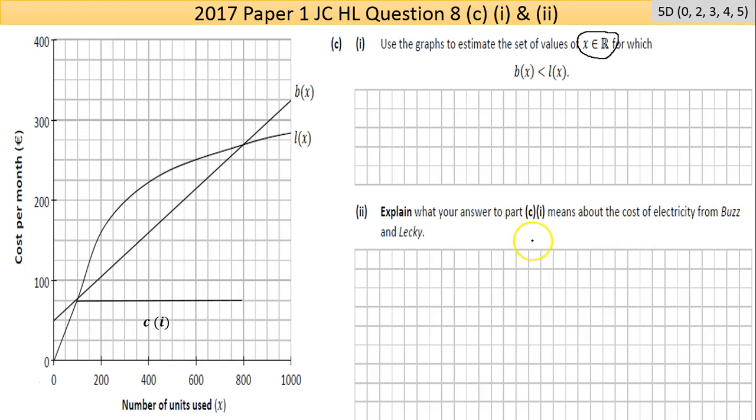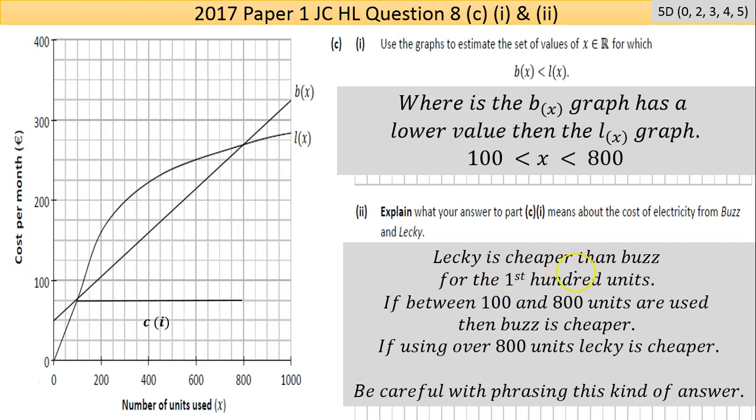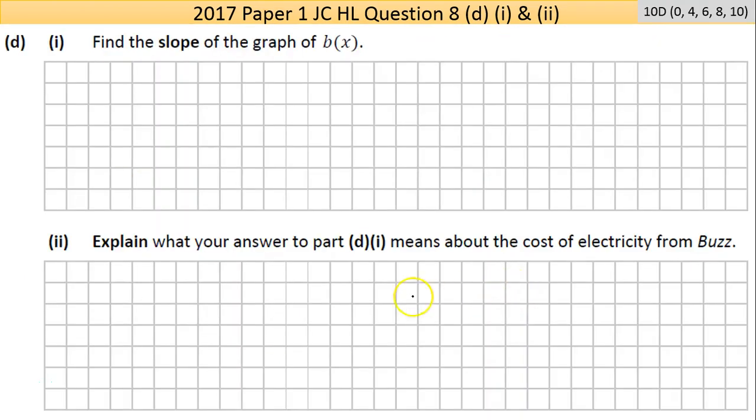Part C2 there: explain what your answer to part one means about the cost of electricity from Buzz and Lecky. Lecky is cheaper than Buzz for the first hundred euros, then Lecky gets more expensive. Buzz is rising at a steady amount, Lecky is getting more expensive but at some point starts to level off. At this point here over 800 units Lecky is cheaper than Buzz. So if you're a school it might be smarter to go Lecky, but if you're a household using less units it might be smarter to go with Buzz.